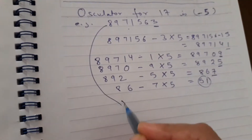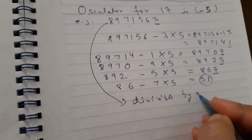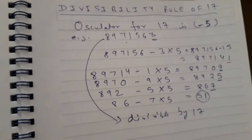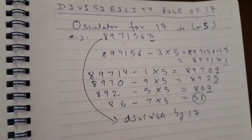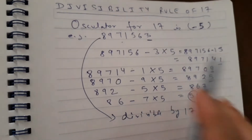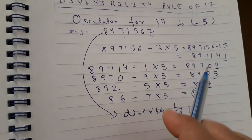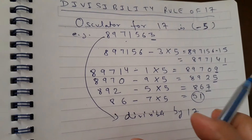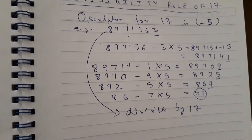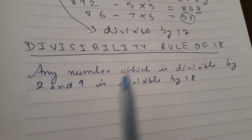Now 51 is clear — it is divisible by 17. That's why this original number 8971563 is divisible by 17. This is the process to check whether a number is divisible by 17 or not. Just remember the oscillator for 17 is minus 5 and repeat the process until you get a number that is clearly divisible by 17 or not.